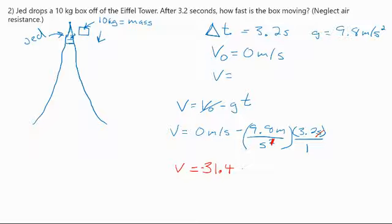Now, there's two ways to do this. If you look in the multiple choice, it'll say 31.4. But if you read the directions carefully, remember the negative just means that it's going in the negative direction, right? Going down is negative.